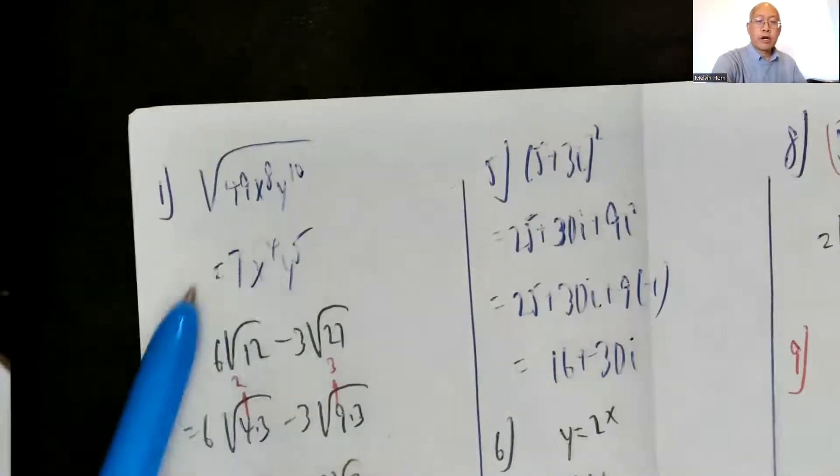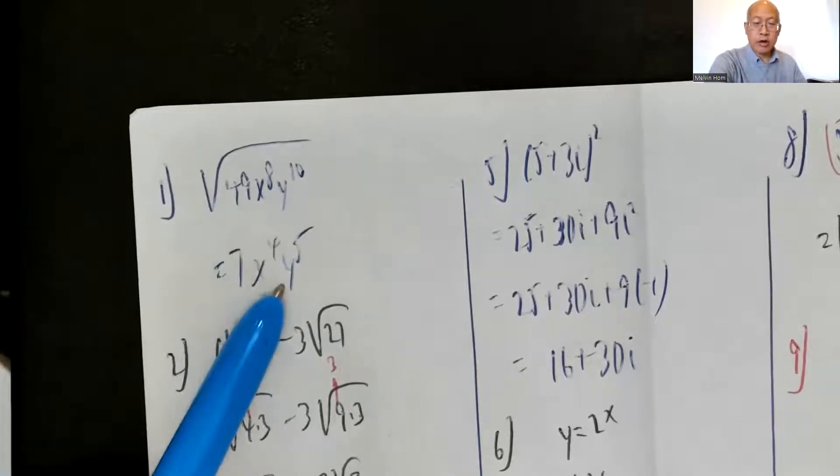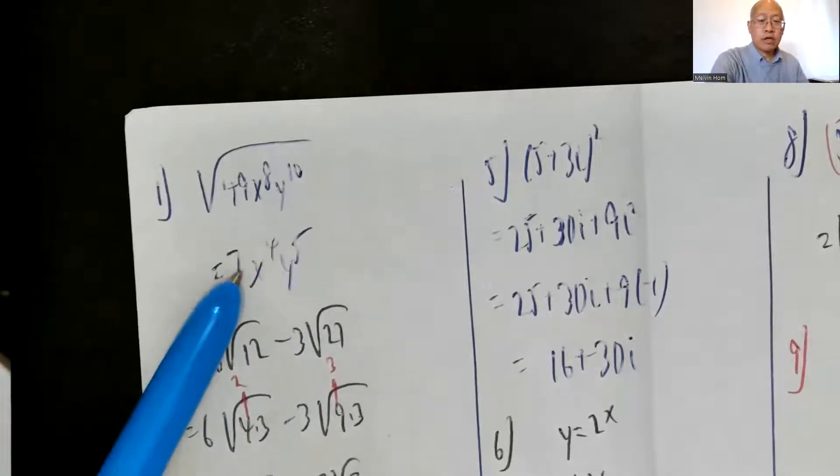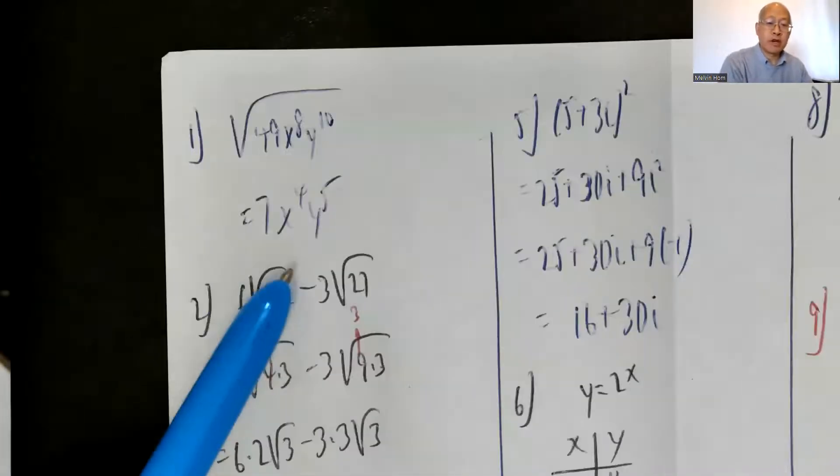Square root of 49 is 7, square root of x to the 8th is x to the 4th, square root of y to the 10th is y to the 5th. So we have 7x to the 4th y to the 5th.